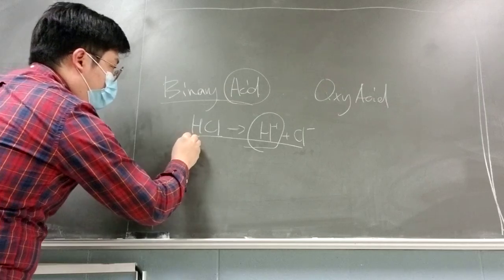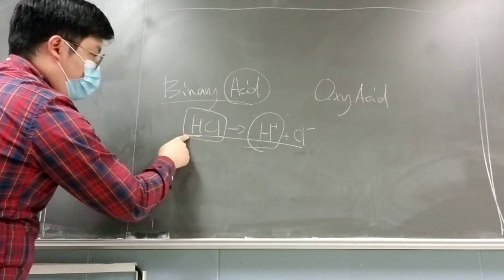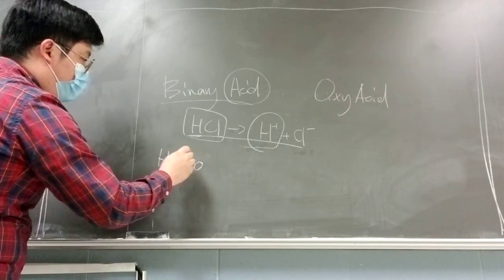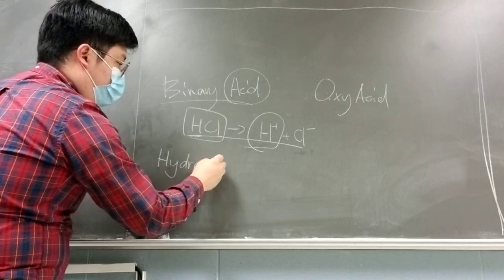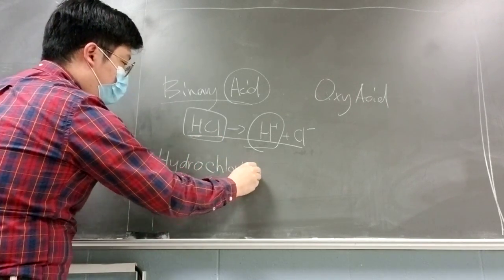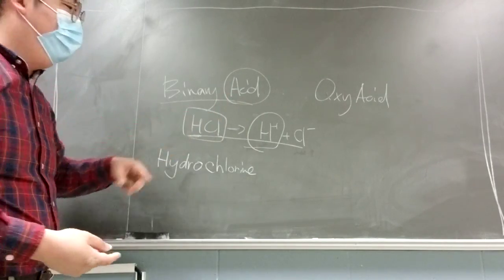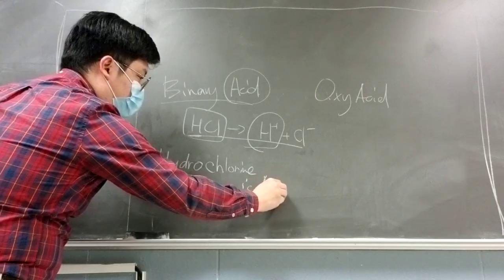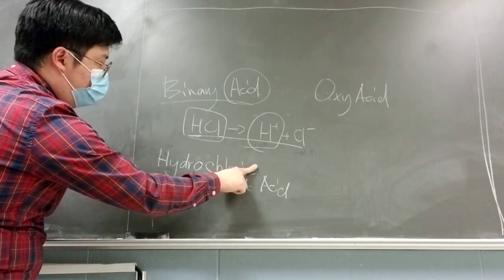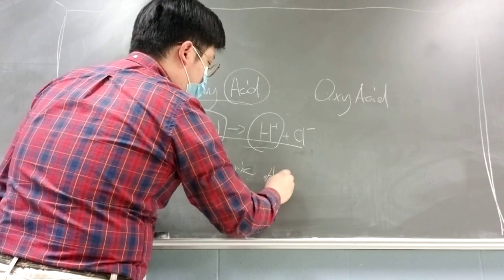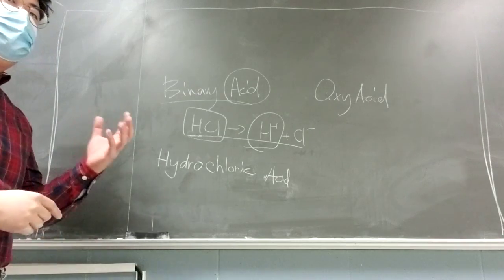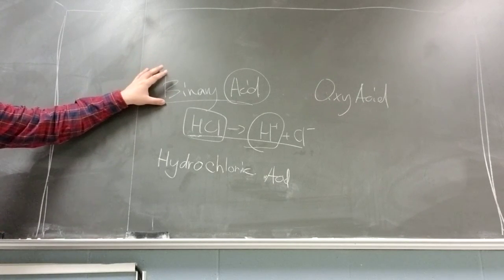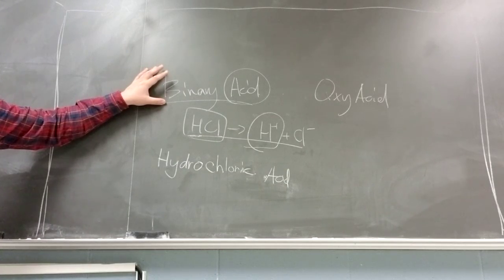For naming binary acids: for the hydrogen part, you change 'hydrogen' to 'hydro.' For the chlorine part, you keep 'chlor' but change the ending to '-ic acid' instead of '-ide.' So HCl is named hydrochloric acid. Whenever you see HCl on a bottle, that's hydrochloric acid. This is how we name binary acid compounds.